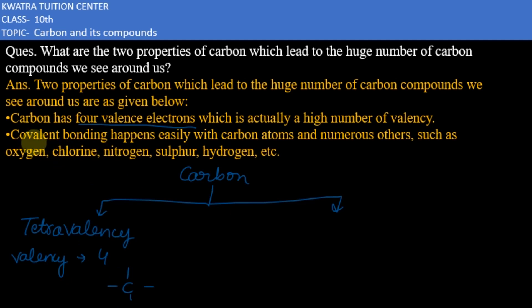And second is catenation. Catenation is a property of carbon, and we can say that it is a property to form bonds with huge number of elements.